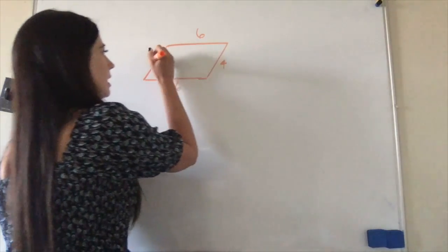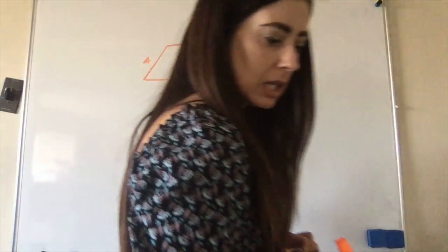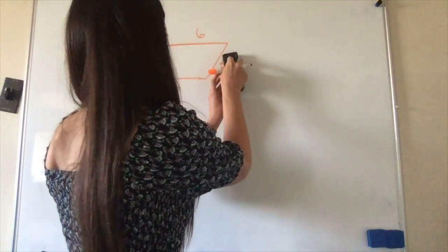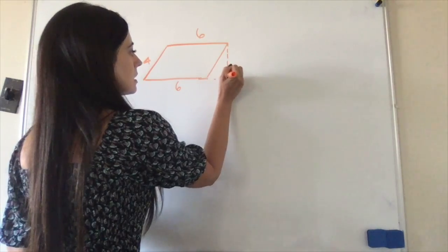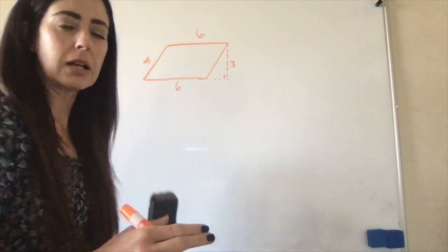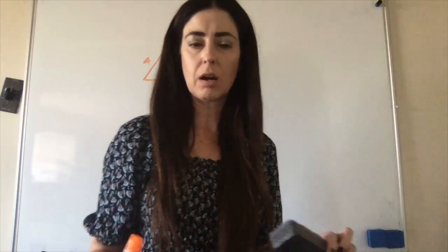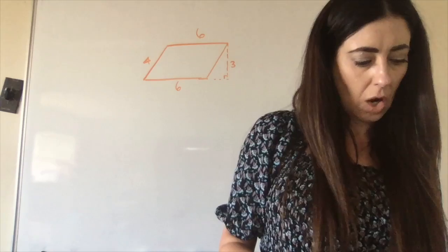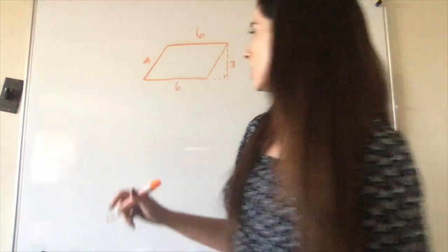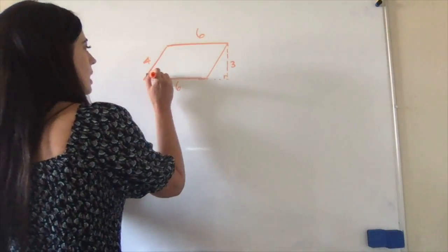And our diagonal length there is four. And then it shows us that this is three. Now remember, diagonal lengths and heights that are 90-degree angles are not the same. So what they tell us to do first is to cut this into two triangles.